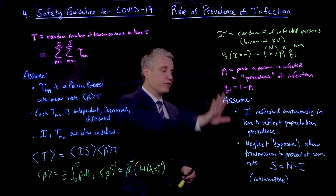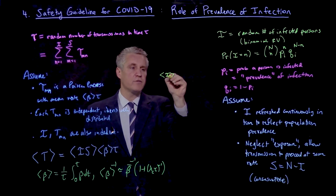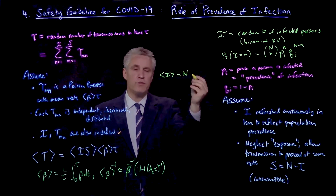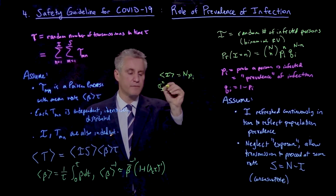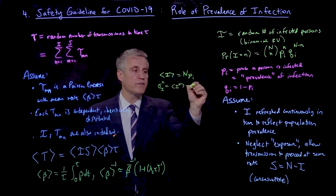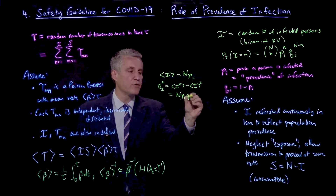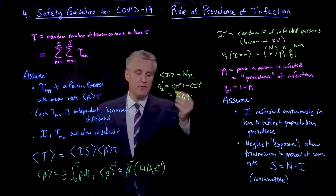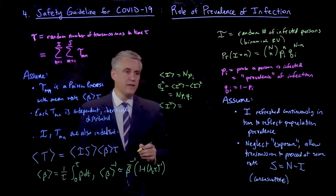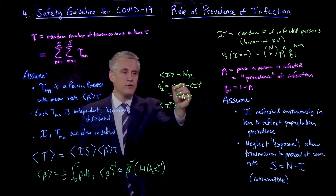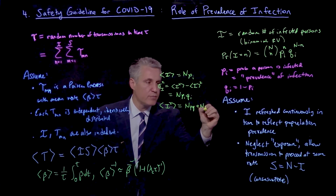Let me now do a couple of quick calculations based on this model. So first, given a binomial distribution, the expected value of the random variable I is just the number in the room N times pi, the prevalence. And furthermore, the variance of I — which is the expected value of I squared minus the expected value of I quantity squared — is N times pi times q_i, the basic result for a binomial random variable. From there, you can solve for the expected value of I squared, and find that it equals N pi q_i plus (N pi) squared.